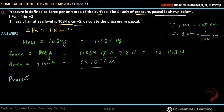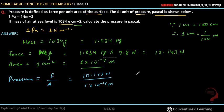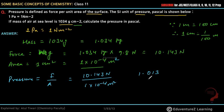अब pressure का formula क्या होता है — pressure equals to force by area. तो force का जो value निकाला वह 10.143 Newton है, और area का value है 1 into 10 to the power minus 4 meter square (meter नहीं, meter square — क्योंकि यह centimeter square है). तो यह value meter square में आ गया. इसको solve करने पर यह हो जाएगा 1.013 into 10 to the power 5 Newton per meter square.